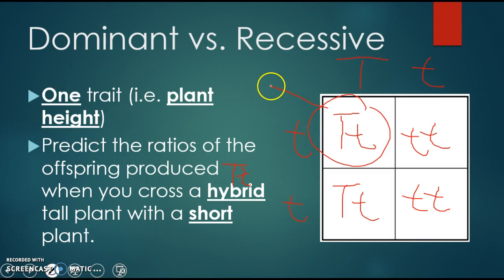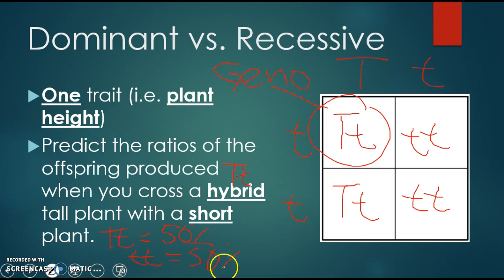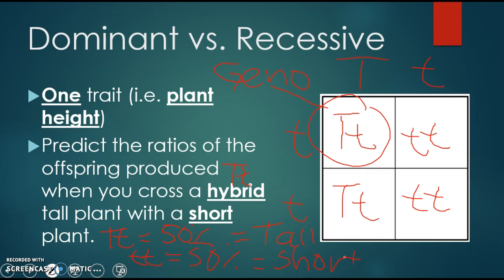This genotype is found in two boxes, which means the probability that their offspring is heterozygous or hybrid is 50%. The probability that their offspring are short, or homozygous recessive, is also 50%, because their genotypes appear in two boxes. So looking at the phenotype, those individuals would be 50% tall and 50% short. That's how you complete a Punnett square using simple dominant recessive traits.